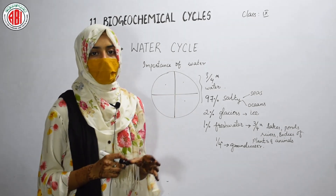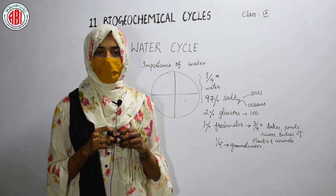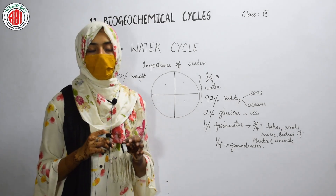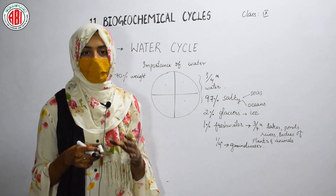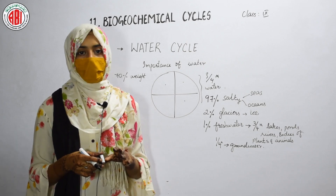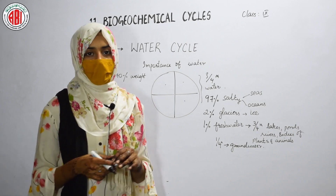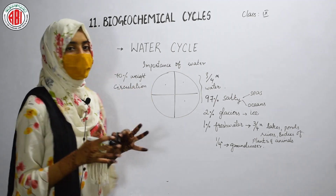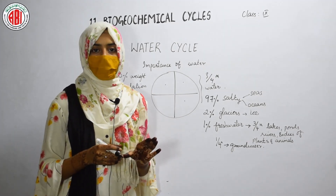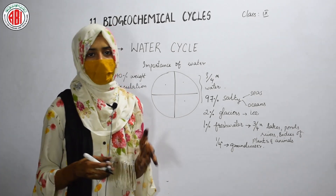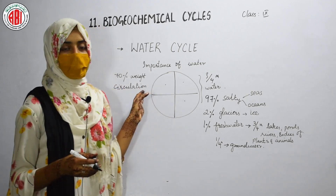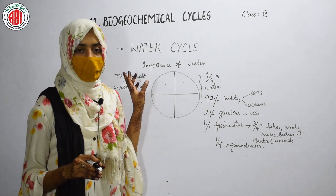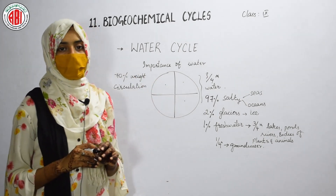In a human, around 70 percent of body weight is due to water. Water plays a vital role in carrying out different activities in the bodies of living organisms. In human beings, water is required for proper circulation. If water is not present in our body, the blood becomes thick, circulation stops, the pulse rate falls down, and we may die. So circulation is a very important process that depends on the presence of water.